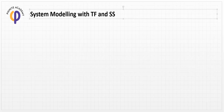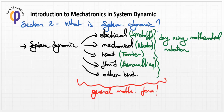In this lesson we will focus on how to create system modeling with a transfer function and state-space representation. In the previous lesson we talked about how to create system dynamic modeling by using equations of motion for electrical, mechanical, heat, or fluid systems, which gives us the general mathematical notation of the system dynamic equation.